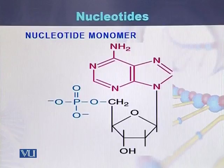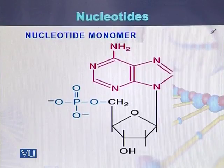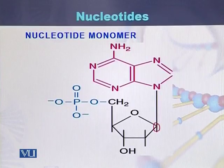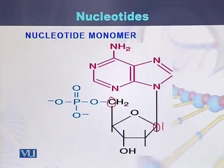Looking at the nucleotide monomer, we can see three components. One is the pentose sugar. At carbon number one of the pentose sugar, the nitrogenous base is attached. At carbon number five of the pentose sugar, the phosphate group is attached.